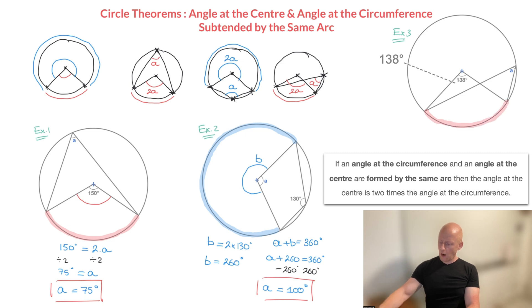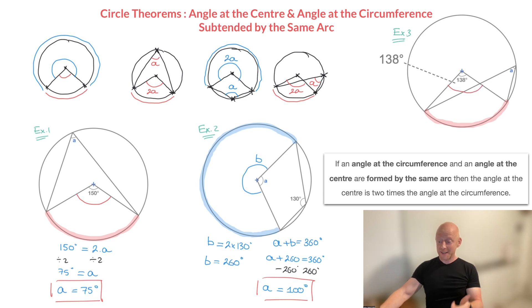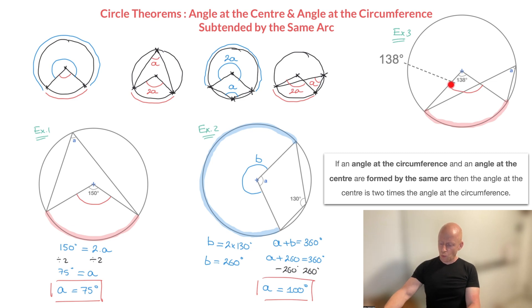We quickly see that the arc forming this angle at the circumference is the one I'm hovering over right now — I'll highlight it in red. Now that we know which arc is subtending the angle at the circumference, we need to focus on the angle at the center formed by the same arc — that's this 138-degree angle right here. Since this angle A at the circumference and this 138-degree angle at the center are subtended by the same arc, we can state that 138 degrees must equal 2 times A.